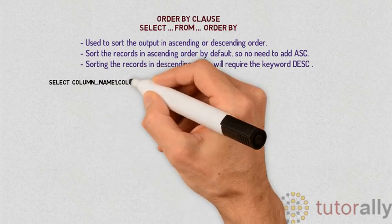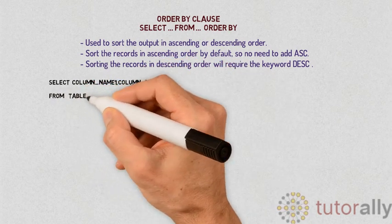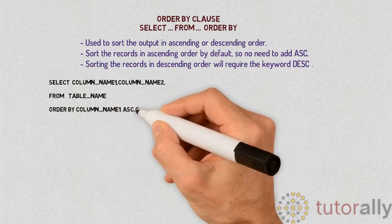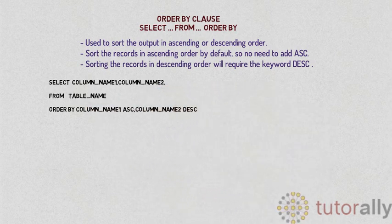The syntax would be: SELECT column_name1, column_name2 FROM table_name ORDER BY column_name1 ASC, column_name2 DESC.